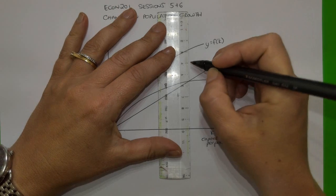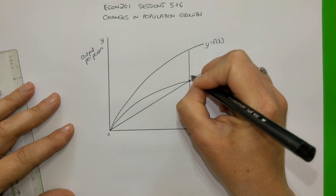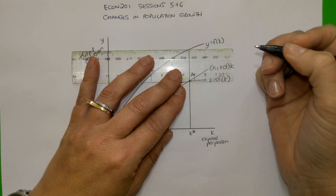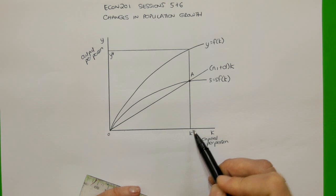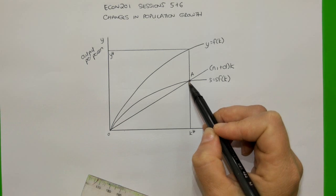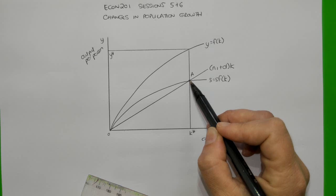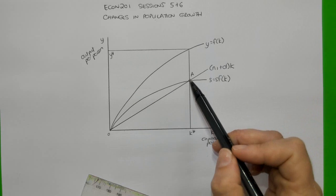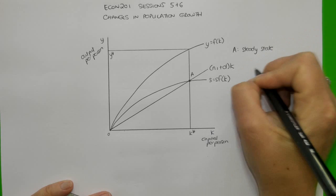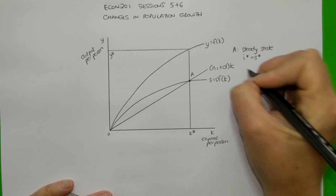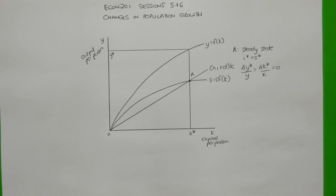To show the original steady state: the original steady state occurs where savings per person being generated is exactly equal to the amount of investment required to maintain the capital-to-labor ratio at that level. So when the capital-to-labor ratio is K-star, the investment per person needed — I-star — keeps that ratio constant, and that equals the savings per person generated when output per person is Y-star. So the steady state equilibrium is at point A. In steady state, investment per person equals savings per person, meaning there is no further change in either output per person or capital per person once that steady state is reached.